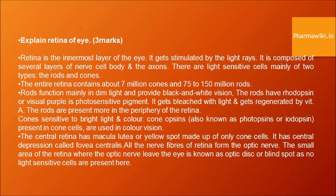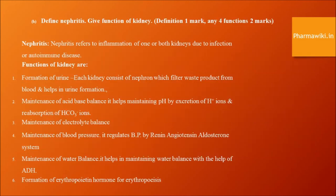Nephritis and the functions of kidneys. Nephritis refers to inflammation of one or both kidneys due to infection or autoimmune disease. Functions of kidneys: formation of urine, maintenance of acid-base balance, maintenance of electrolyte balance, maintenance of blood pressure, maintenance of water balance, and formation of erythropoietin hormone for erythropoiesis.